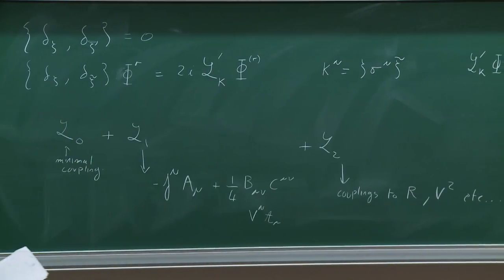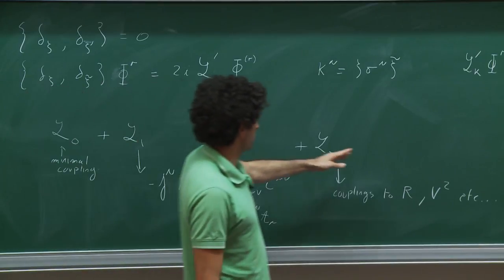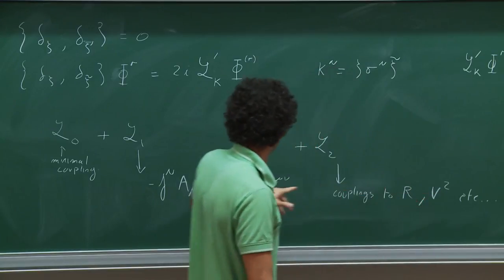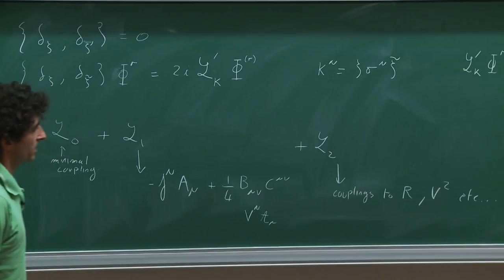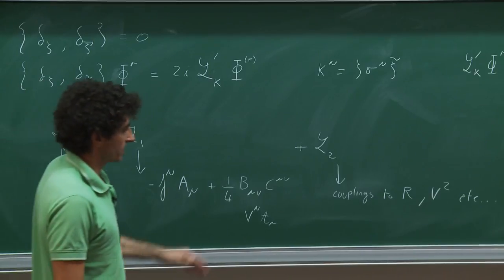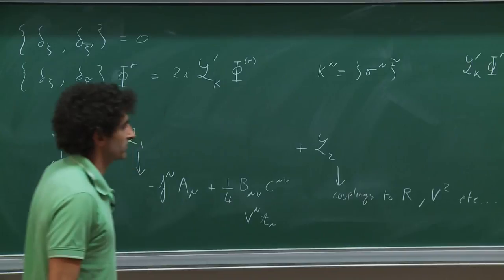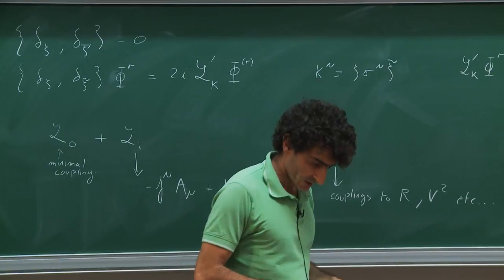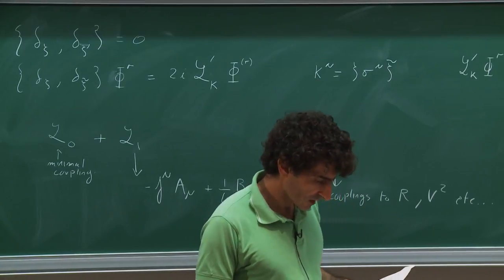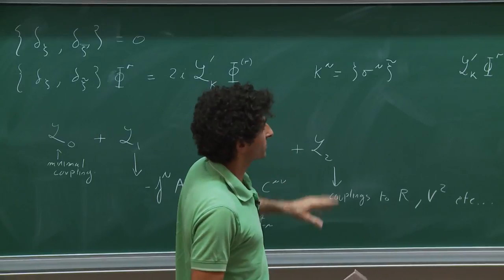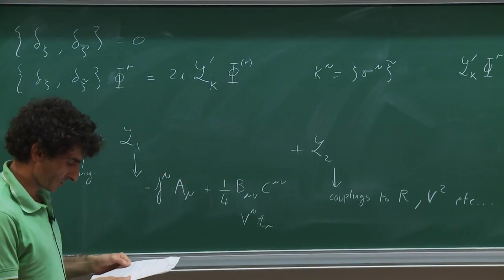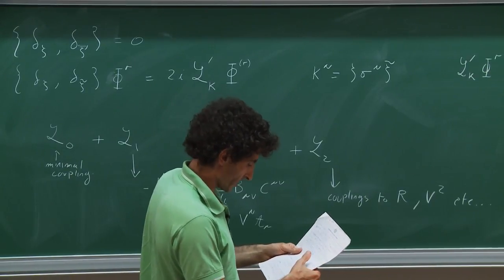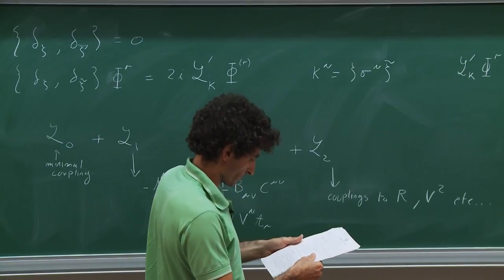This is consistent with dimensional analysis: the background gauge fields V and A have dimension one, so they scale like 1/R where R is the overall radius of your manifold, while the curvature scales like 1/R². There are also couplings to products of two auxiliary fields. Let's now write down an explicit example so you can see this borne out in practice.